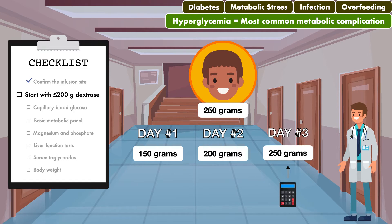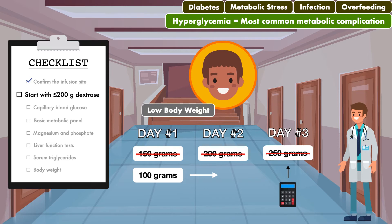As an aside, if a patient has a low body weight and the goal dextrose load is 200 grams per day or less, you should start lower than 150 to 200 grams — in this situation, you can provide approximately 100 grams. This also applies if the patient already has poor blood glucose control. Recommendations for the use of insulin with parenteral nutrition is beyond the scope of this video; however, it will obviously play a role in the management of a patient with persistent hyperglycemia.